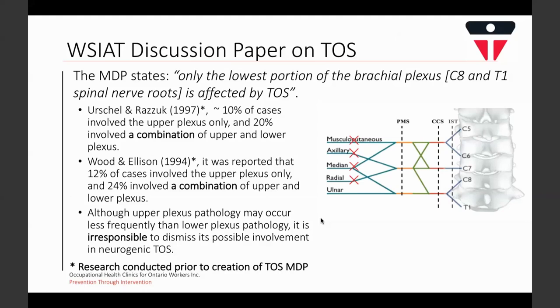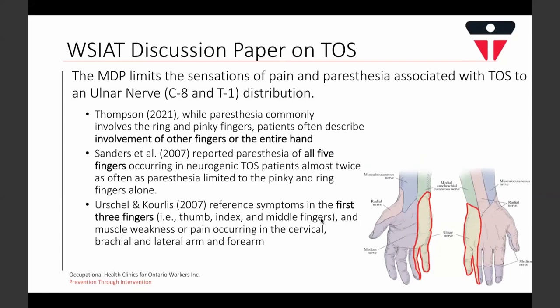When describing neurogenic TOS symptoms, the medical discussion paper limits pain and paresthesia to an ulnar nerve distribution, reflecting its claim that only the lower brachial plexus is involved. However, most clinical publications describe symptoms that extend beyond an ulnar nerve distribution and most often include other fingers or the entire hand. The distribution of symptoms depends on which part of the brachial plexus is compressed, and should not disqualify the condition from being TOS.